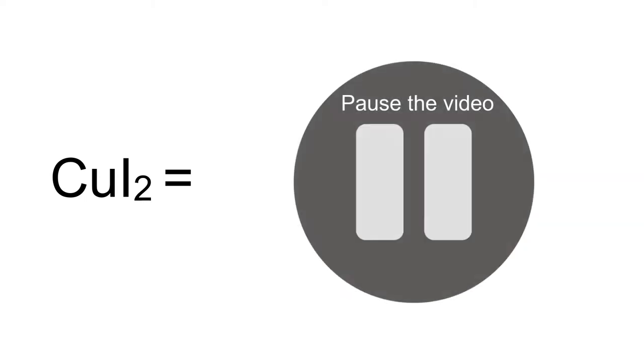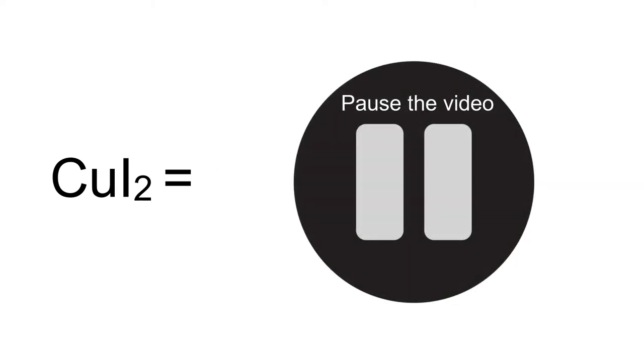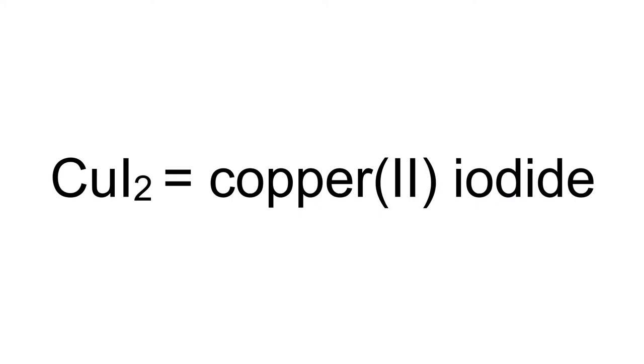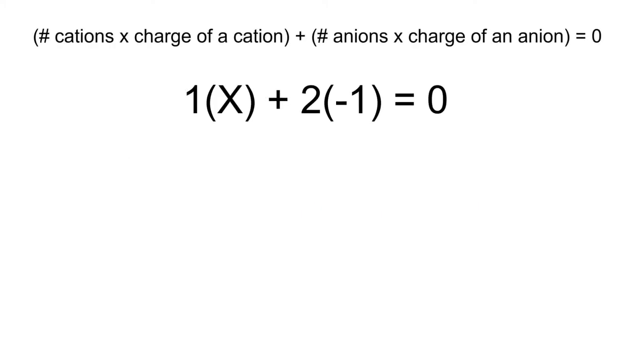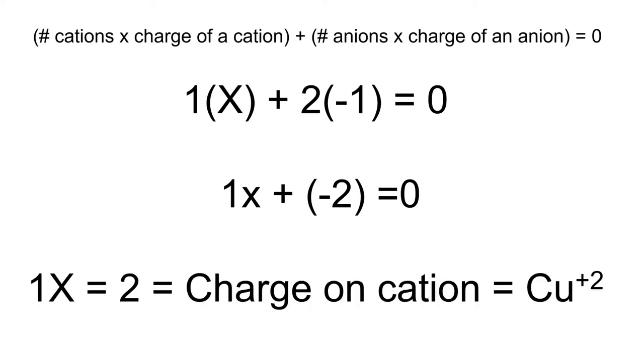Hopefully, you got copper(II) iodide. If not, let's use that formula again. 1 copper times x plus 2 iodide times negative 1 equals zero. We then get 1x plus negative 2 equals zero. Add 2 to both sides and we get x equals positive 2. And remember that x equals the charge on our copper.